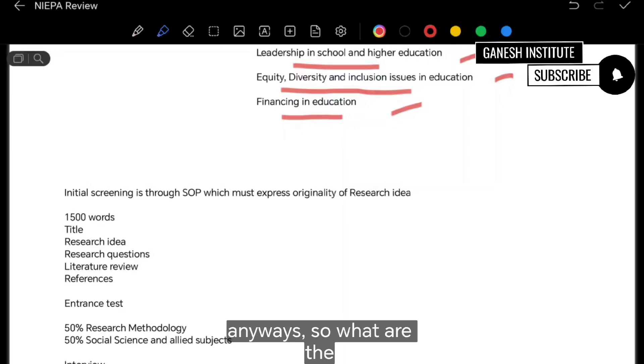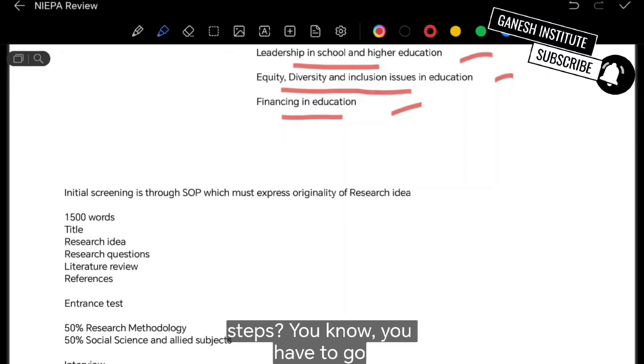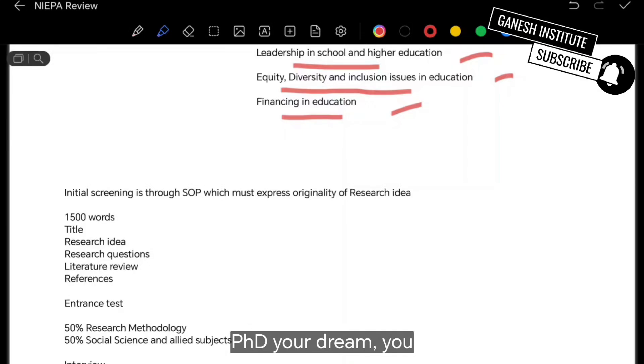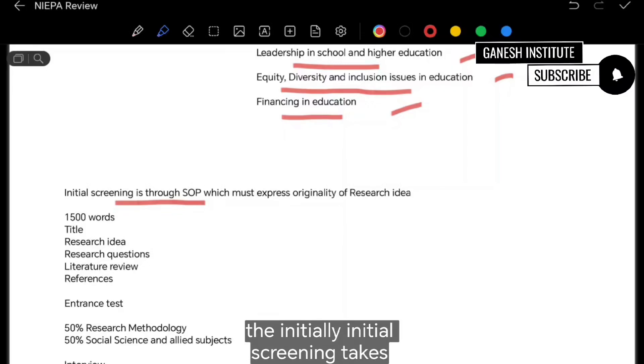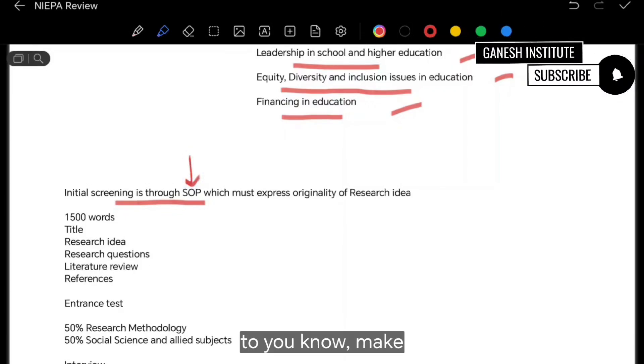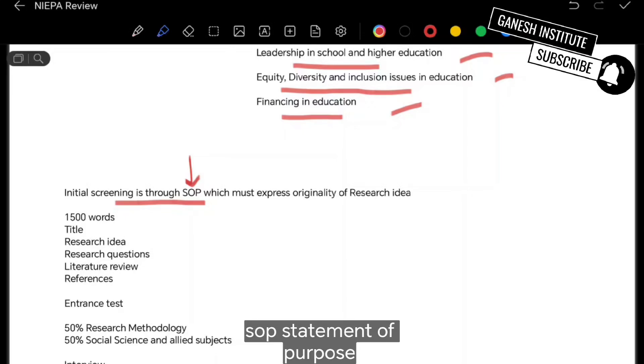So what are the steps you have to go through when it comes to enrollment in PhD? Initially, the initial screening takes place when you have to make SOP, statement of purpose, and it should have your research idea, the title, research questions, literature review.